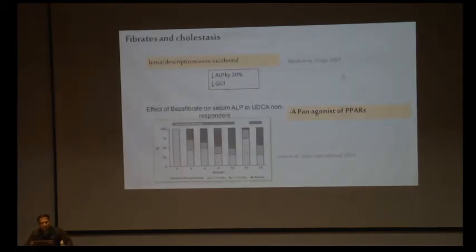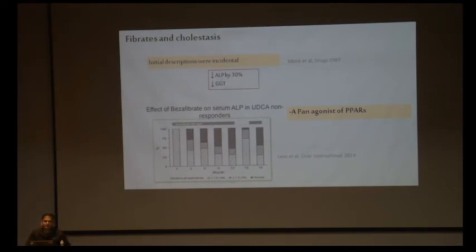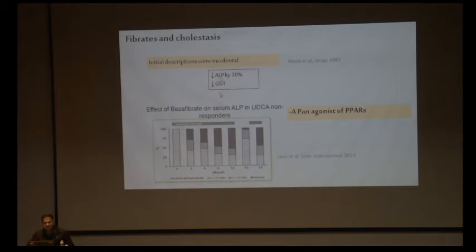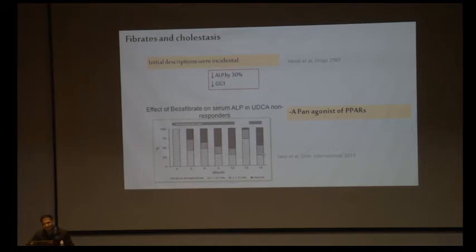Initial descriptions of fibrates were incidental. Bezafibrate was shown to decrease alkaline phosphatase and gamma-GT by about 30% in PBC patients — used not for pruritus but for biochemical endpoints. This was first reported in 1987. In 2014, a study reconfirmed at least 25% reduction in alkaline phosphatase with bezafibrate, and the improvement reversed after discontinuation, returning when restarted.